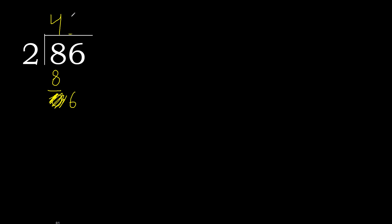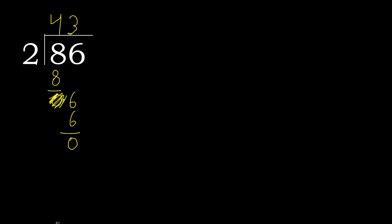2 multiplied by 3 is 6. 6 minus 6 is 0, and there is no remaining number, therefore we finish. 86 divided by 2 is 43.